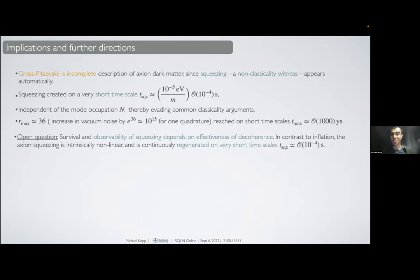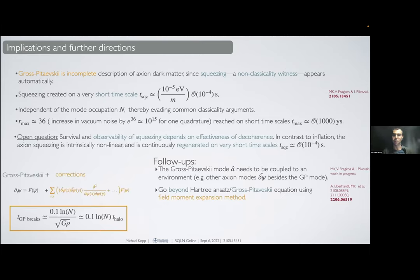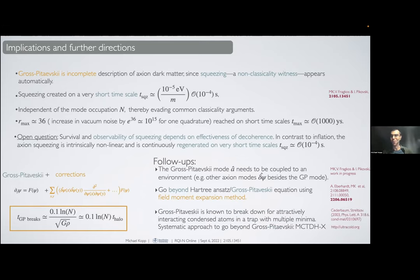Usually occupation numbers are invoked to argue for classicality. Open questions are if the squeezing can be observed and what decoherence might do to the squeezed states. We are working on this at the moment. In addition, we also worked on actually going beyond the Gross-Pitaevskii equation with colleagues in Stanford, especially Andrew Eberhardt, the PhD student there. He worked out corrections to the Gross-Pitaevskii equation and derived this new time scale at which the Gross-Pitaevskii equation breaks down.